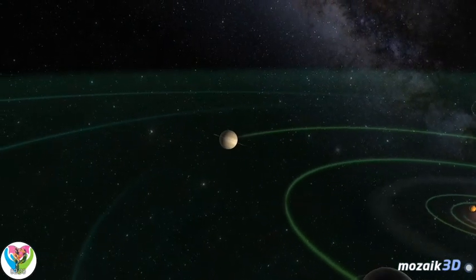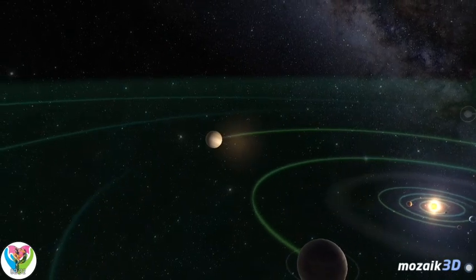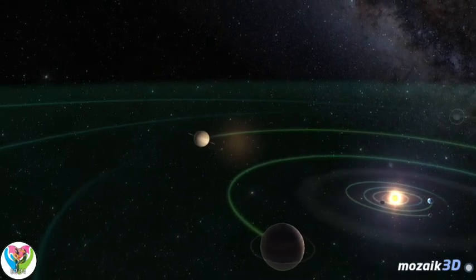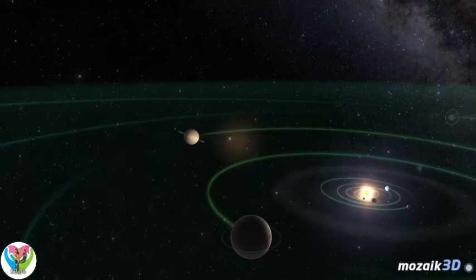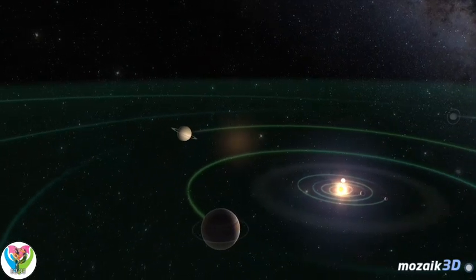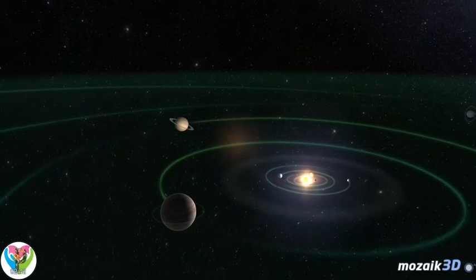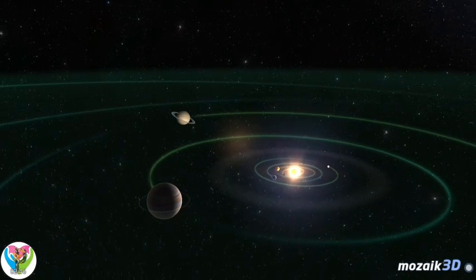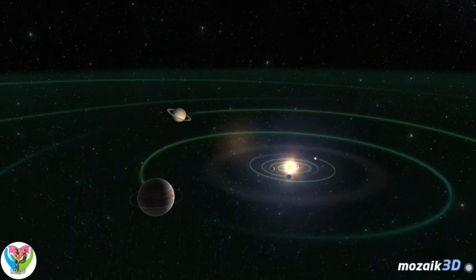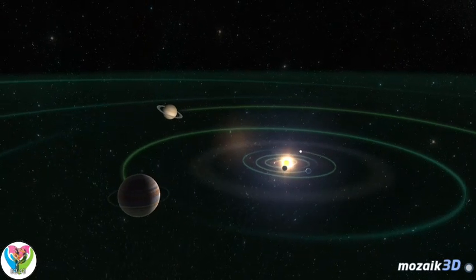Planets are kept in orbit by the gravity of the Sun. The mass of the Sun is 750 times larger than the total mass of the planets. There is also gravitational force between the planets. Therefore, they influence each other's motion. As a result, their orbits might undergo slow, minor changes.